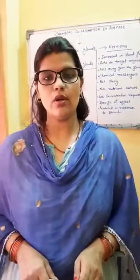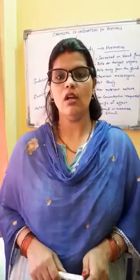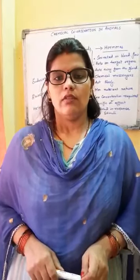Today we are going to study about chemical coordination in animals. We know that in animals, control and coordination takes place by two methods: nervous control, which is through the nervous system, and chemical control, which is through the endocrine system. Today we are going to study about chemical coordination in animals in detail.